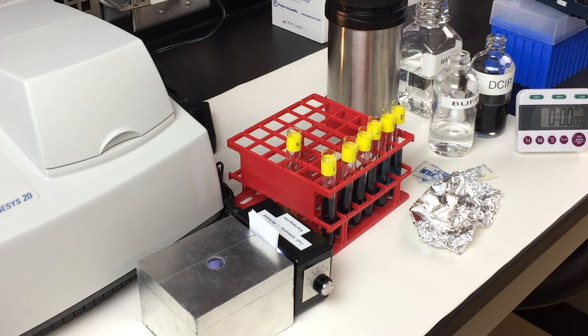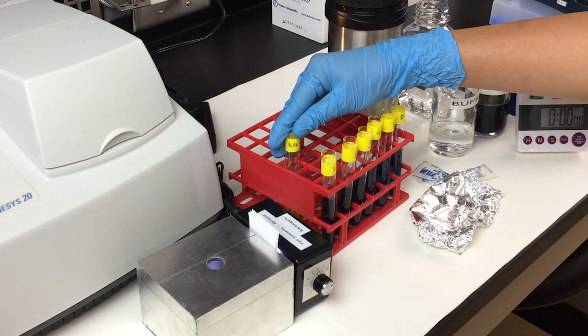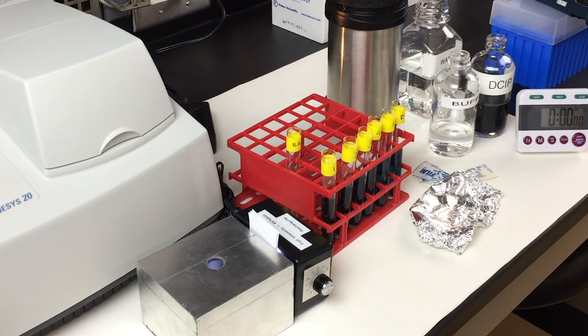The last set of experiments is the experiment using the boiled thylakoid solution. Boiled thylakoid solution will be provided to you. For that experiment, all you need is one tube of blank which was previously prepared, and one tube that will be used with the thylakoid solution that has previously been boiled and provided to you.